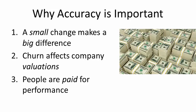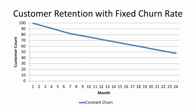One common source of error is assuming churn rates are constant. As shown by this graph, if you start with 100 customers and have a fixed churn rate of 3% per month, you'll have 47 customers by the end of 24 months.